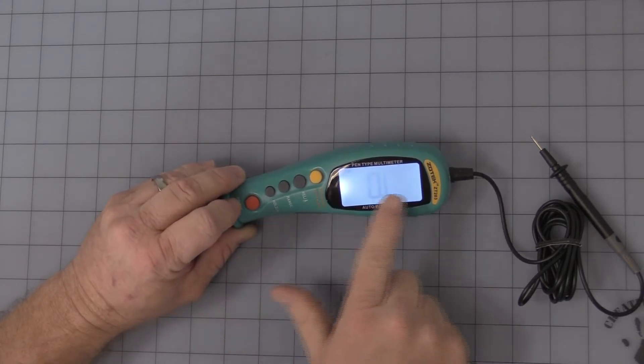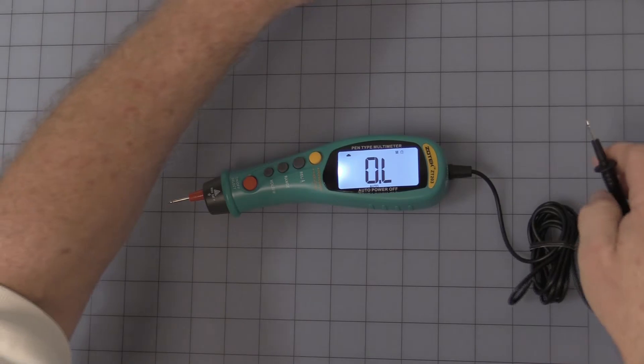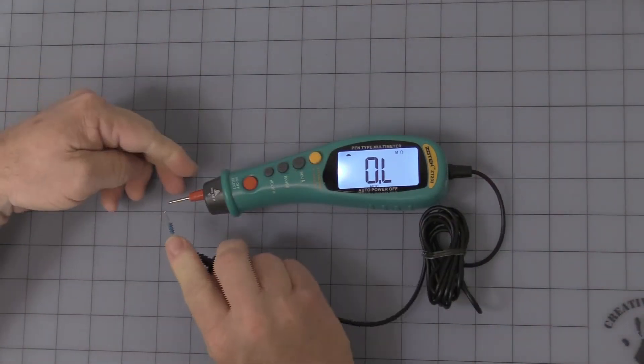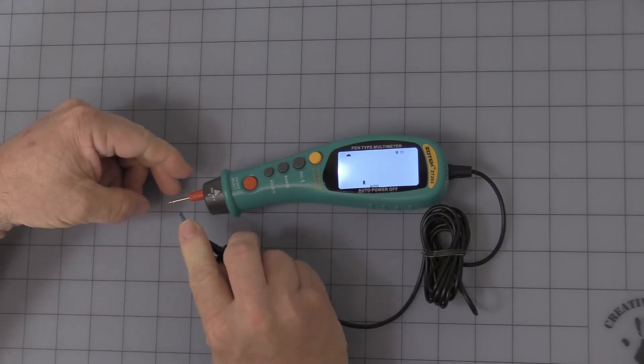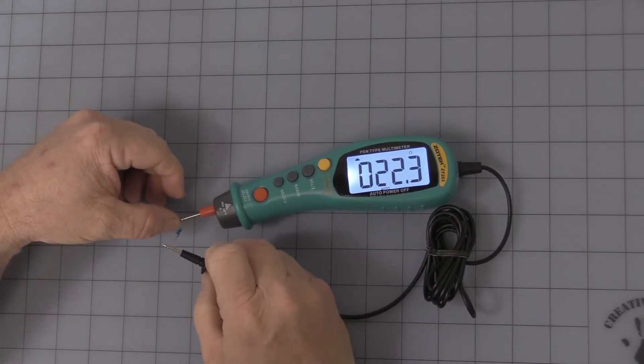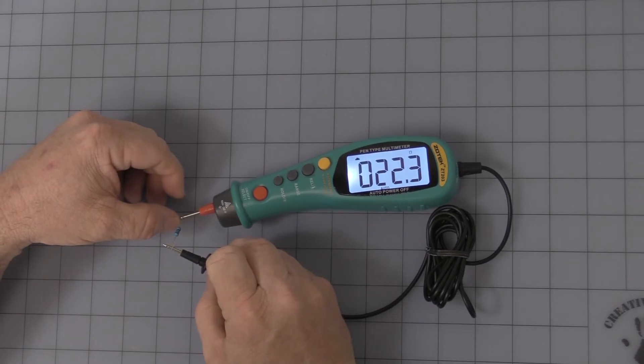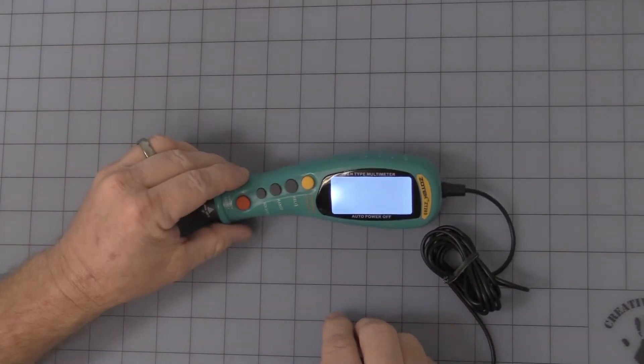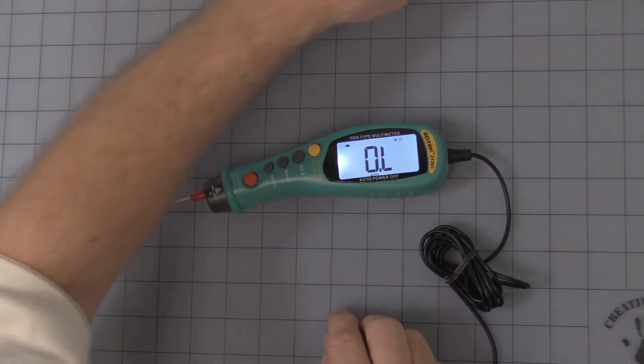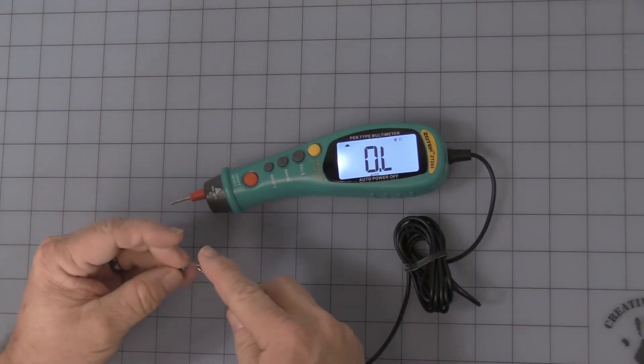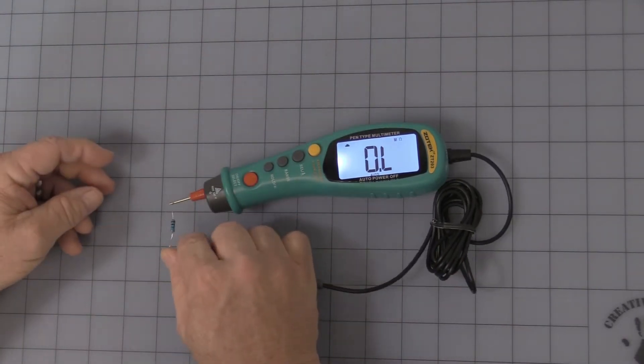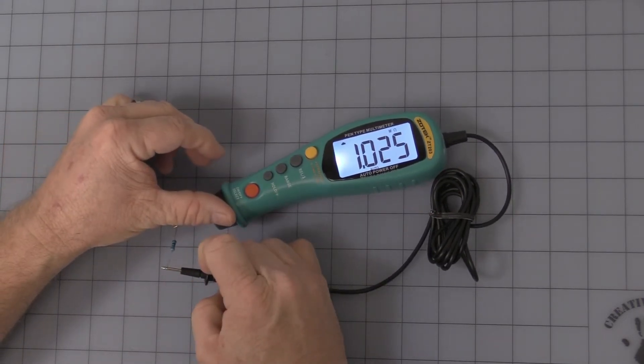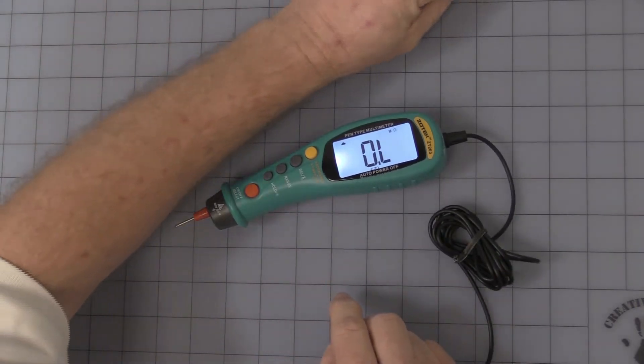Now you press red again and you're into resistance. Now let's see, this is the, just to show you real quickly, 22 ohm resistor. Press the hold button. Okay, here's just a one meg resistor.